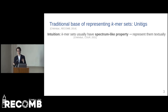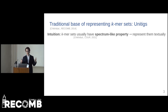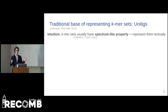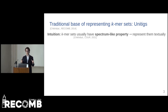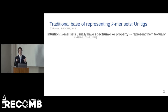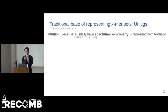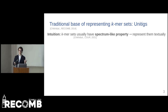If we want to represent the set of k-mers, it makes a lot of sense to represent them textually. This is because k-mers have a so-called spectrum-like property — it means that there are only a few strings that contain all the k-mers. Intuitively, the k-mers overlap a lot, and textual representations can take advantage of this.